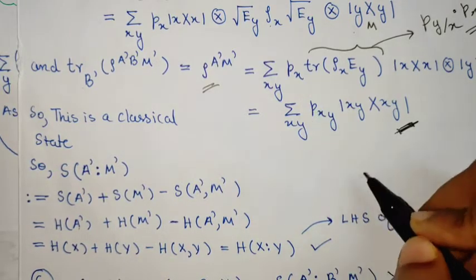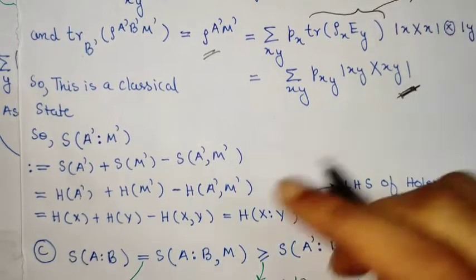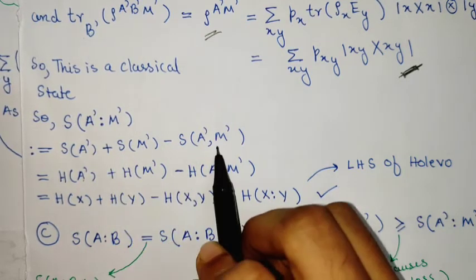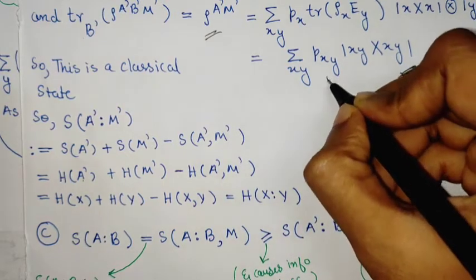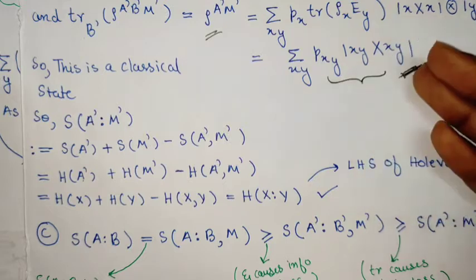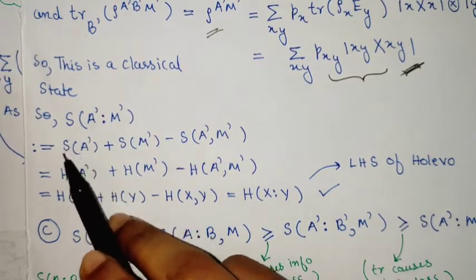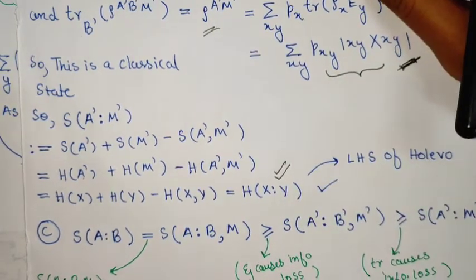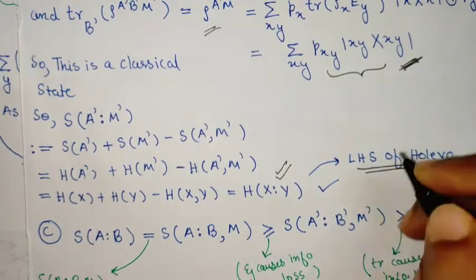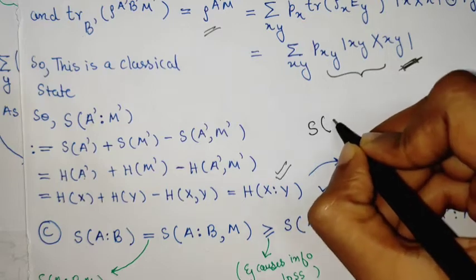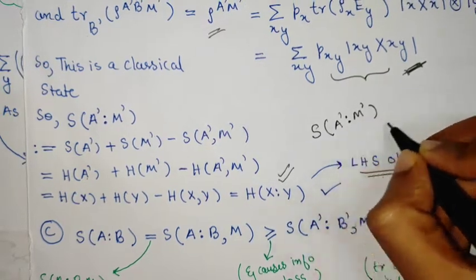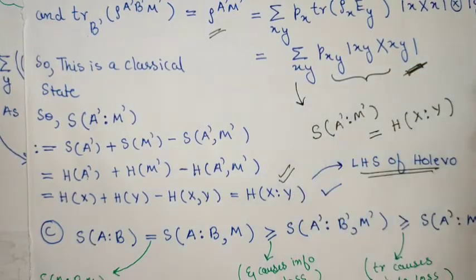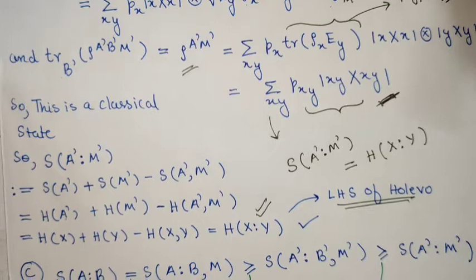Since this is a classical state, the mutual information between A and M is defined in a particular fashion. Because the underlying probability distribution is classical with no quantumness, the von Neumann entropies simply become Shannon entropies. You land up in this particular expression, which is the left-hand side of the Holevo bound — the von Neumann mutual information becomes equal to the Shannon mutual information because this is a classical state.